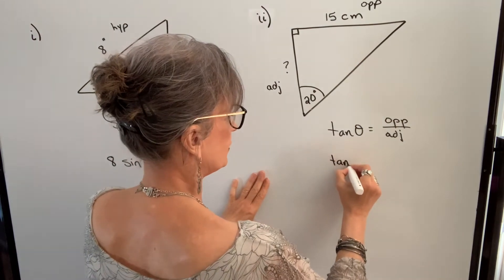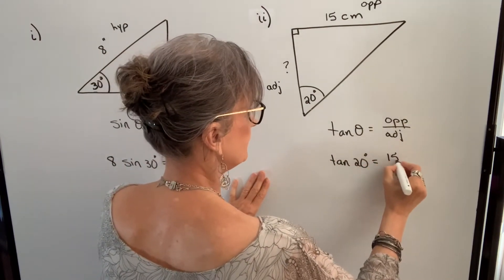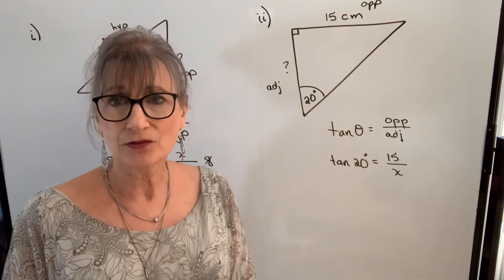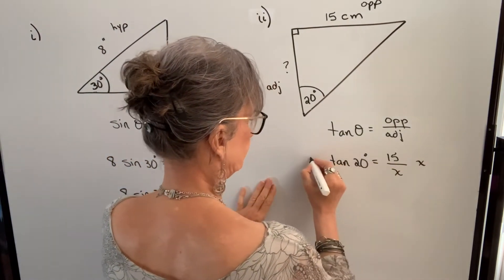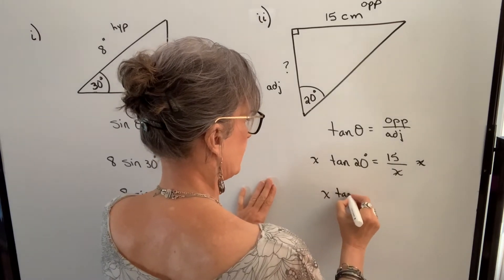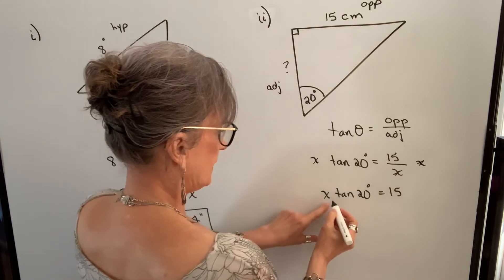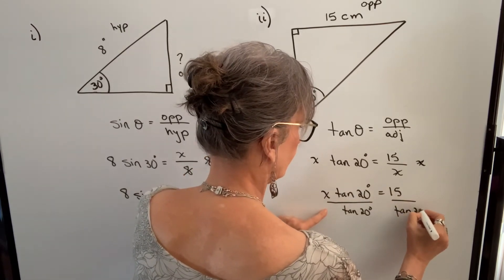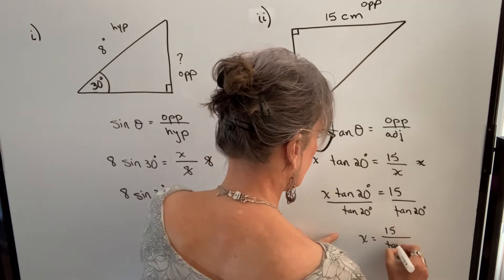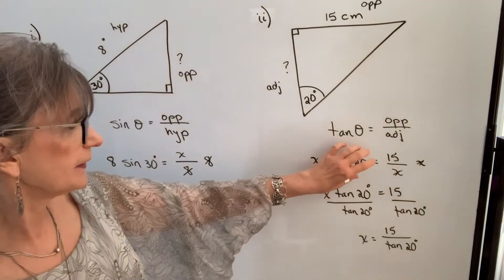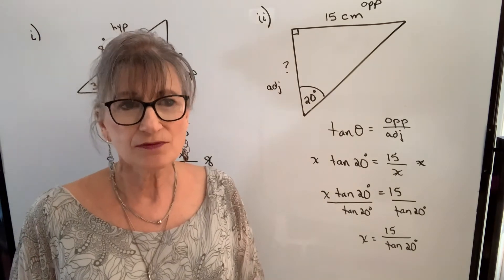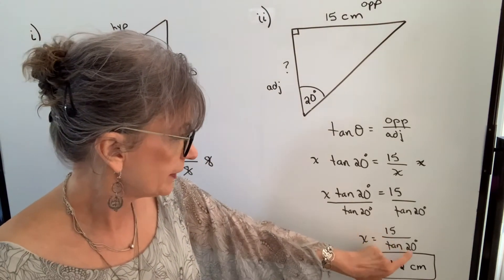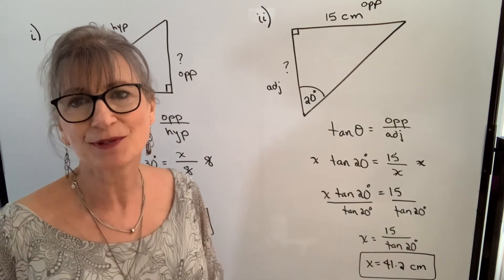So we plug in what we know: the angle is 20 degrees, the opposite side is 15, and the adjacent side we don't know — we're going to call that X. To get X by itself, I need to get it out of the denominator, so I'm going to multiply both sides by X. That cancels on this side, and I'll have X times the tangent of 20 degrees equals 15. Then I divide both sides by the tangent of 20 degrees, giving me X equals 15 divided by the tangent of 20 degrees. When you do the calculation, you should get 41.2 centimeters — try that with your calculator and make sure you're able to get that value.